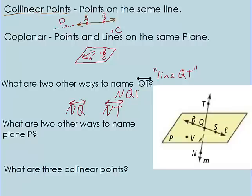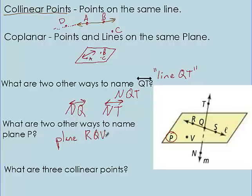What are two other ways to name plane P? This P means plane P — this parallelogram right here. Instead of naming it plane P, we can pick other points that are on this plane. We have to pick three points to name a plane. So plane RQV — because R, Q, and V are three points on this plane. Another way is plane SVR. So three points will make a plane; that's how we can label it.